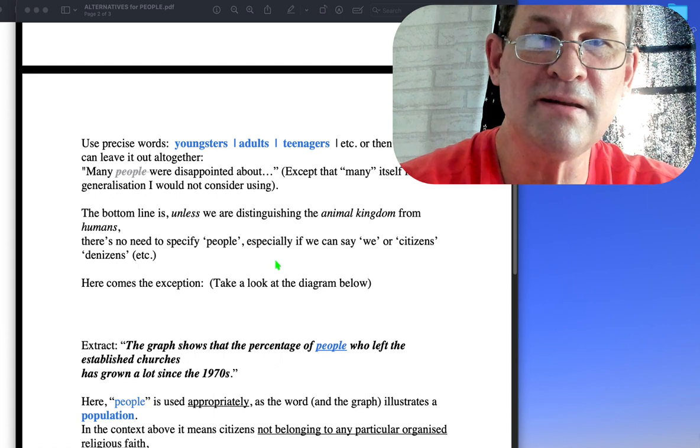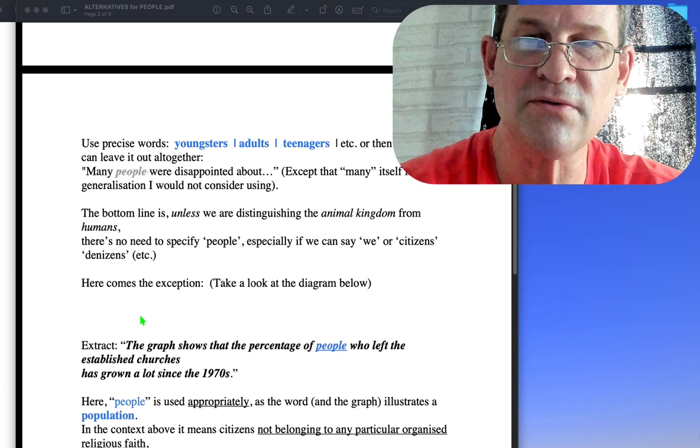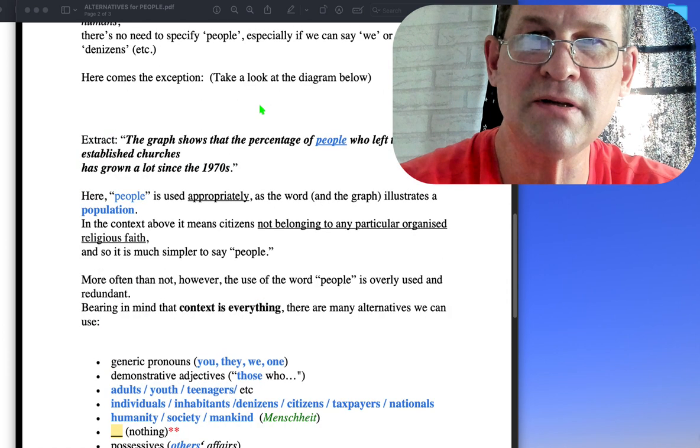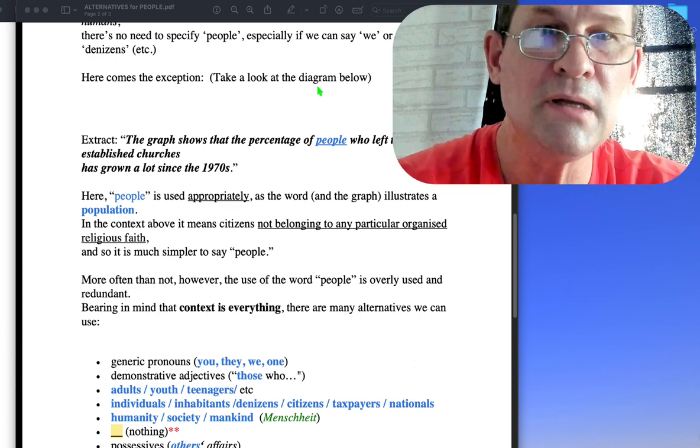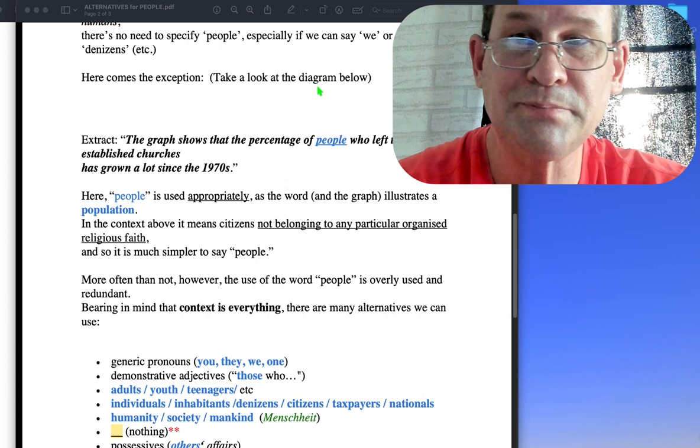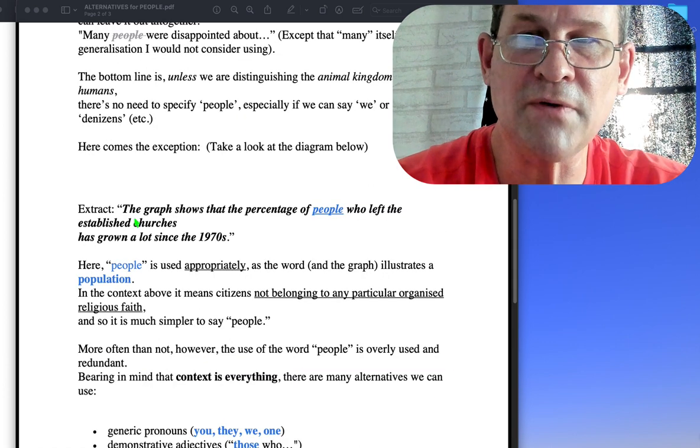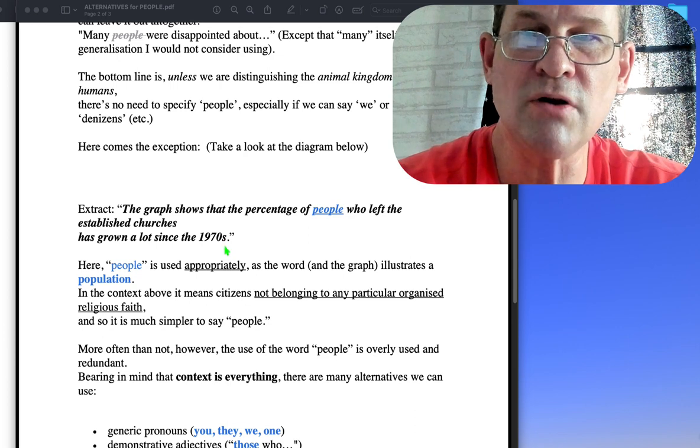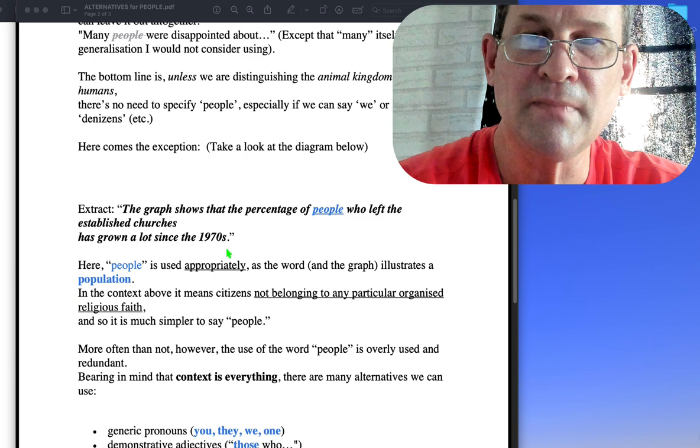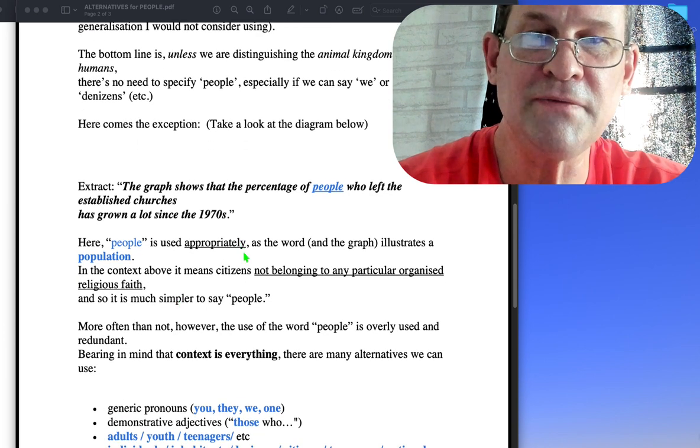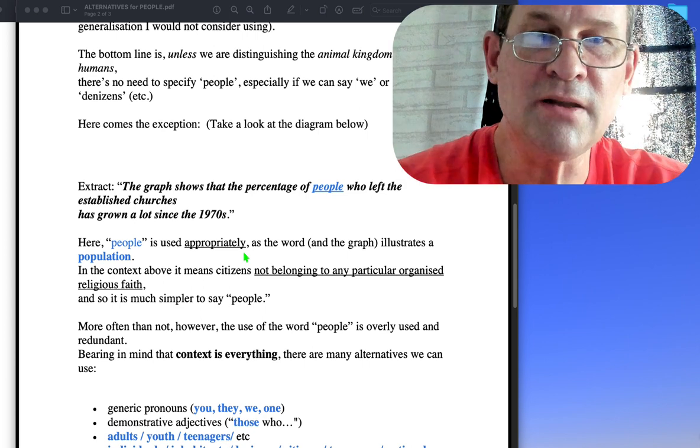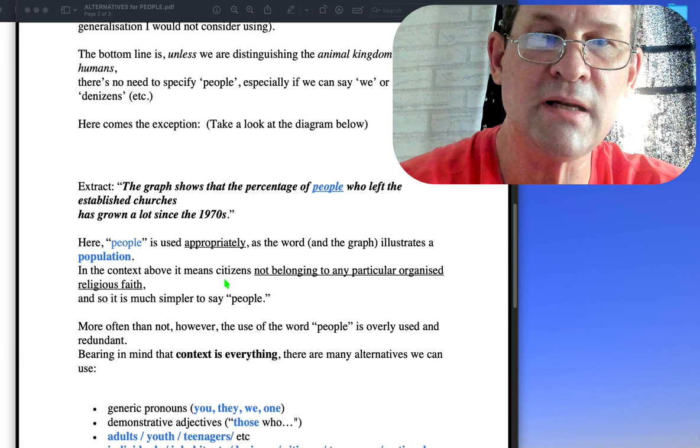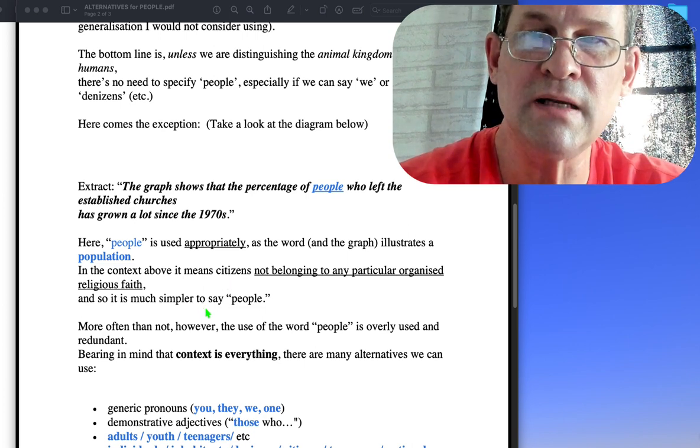Here comes the exception. The extract is from this image: 'The graph shows that the percentage of people who left the established churches has grown a lot since the 1970s.' Here people is used appropriately and effectively, as the word and the graph illustrate a population. In the context above, it means citizens not belonging to any particular organized religious faith, and so it is much simpler to say people.